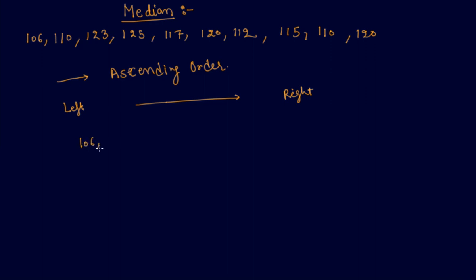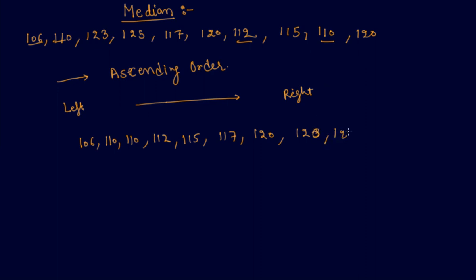So arranging all these numbers in ascending order: 106 is the smallest, then 110, then 110 again, then 112. Then 115, 117, 120, 123, and 122 appears two times.